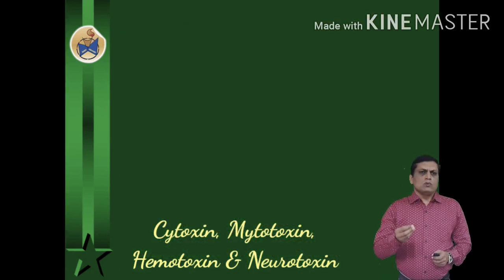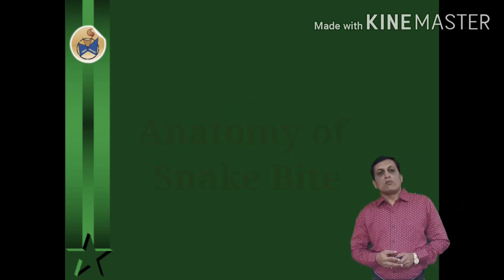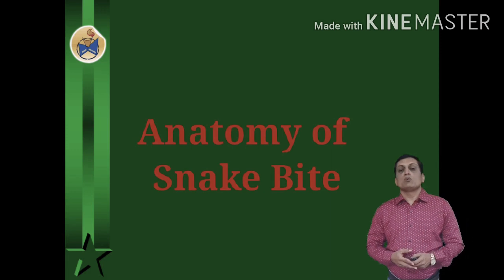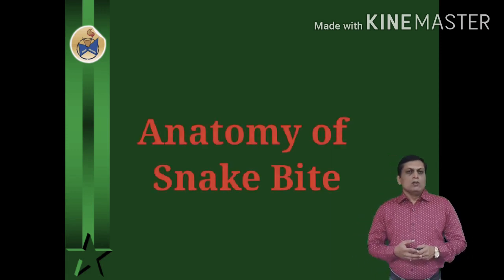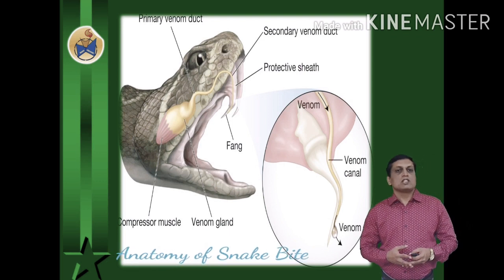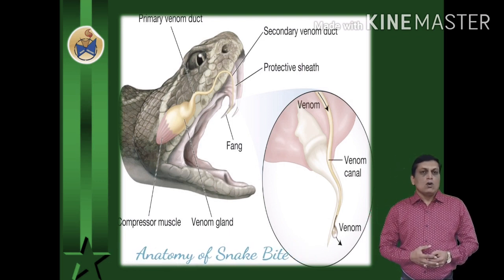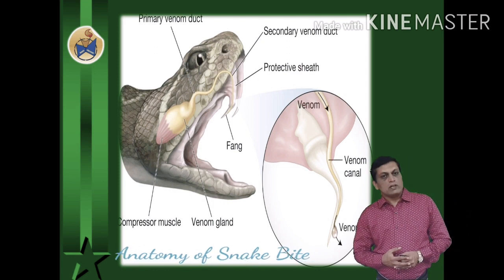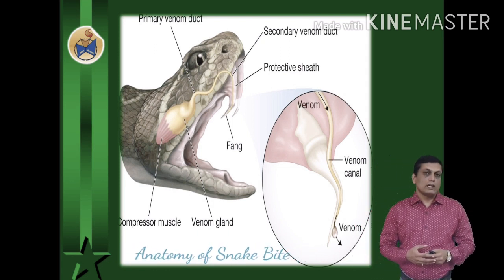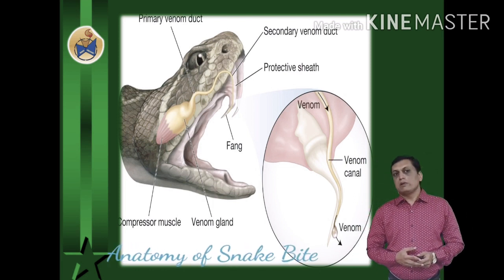Before going into details about these different types of venom, let's try to understand the anatomy of snake bite. The anatomy of venomous snakes is widely varied but some aspects are universal. All snakes have a similar venom-delivering apparatus comprising a venom gland, adduct with an accessory gland, and a fang for venom delivery.